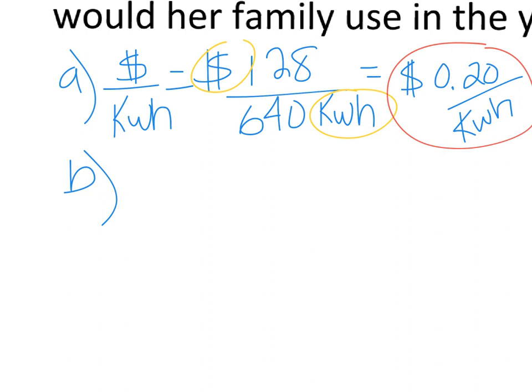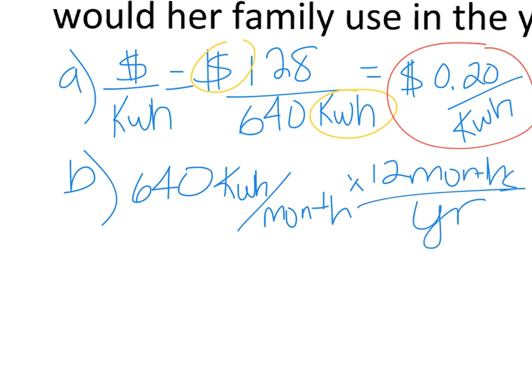Okay, so this is not a very accurate bill because in February electricity is cheap because you don't use much air conditioning. But let's say this was the same amount of electricity. So we're using 640 kilowatt hours per month, and there are 12 months per year. And so now my months cancel. And with a calculator, I can just punch in 640 times 12, and I get 7680 kilowatt hours per year.